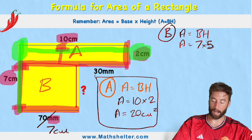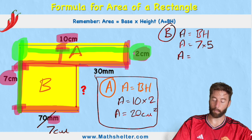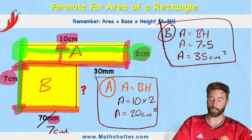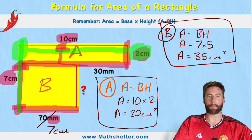So my area equals 7 times 5, which is 35 centimeters squared. And that is the area of shape B.